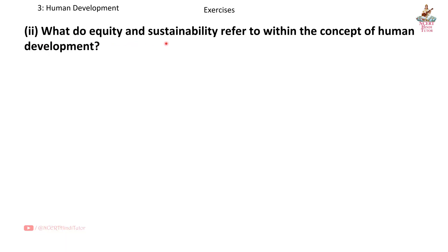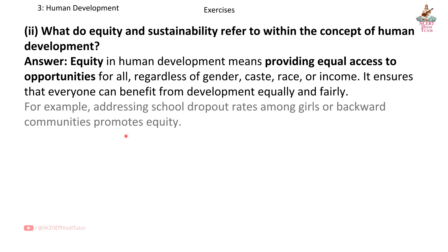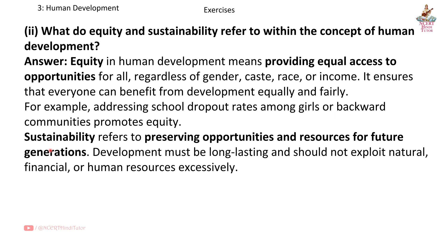Question 2: What do equity and sustainability refer to within the concept of human development? Equity in human development means providing equal access to opportunities for all, regardless of gender, caste, race or income. It ensures that everyone can benefit from development equally and fairly. For example, addressing school dropout rates among girls or backward communities promotes equity.